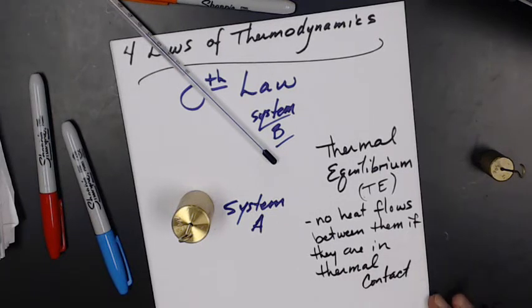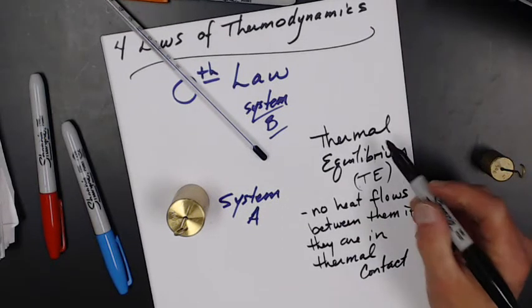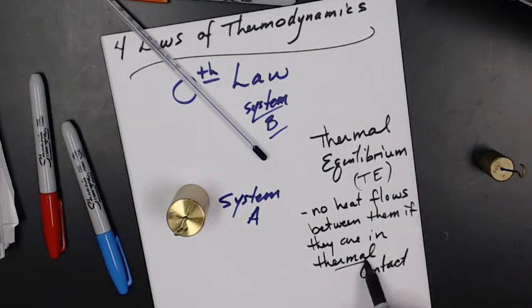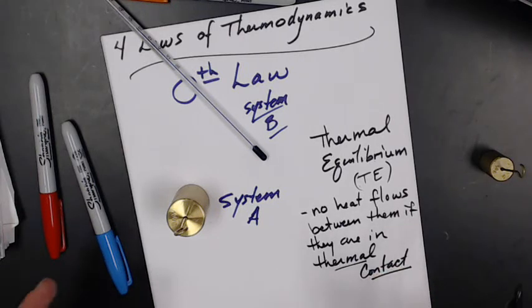I know there's a lot of big words here, and this is why it gets to be an issue. So thermal equilibrium happens when no heat is flowing when they're in thermal contact. So thermal contact means heat could flow, there's a diathermal wall between them.